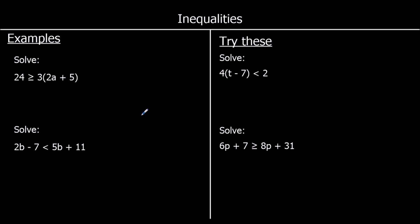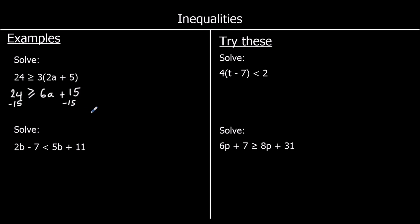Another couple of examples. We'll follow the same steps as solving equations, doing the same to both sides. First, I'll expand the bracket: 3(2a + 5) gives 6a + 15. So the inequality is 24 ≥ 6a + 15. I'll start by taking away 15 from both sides, giving 9 ≥ 6a.